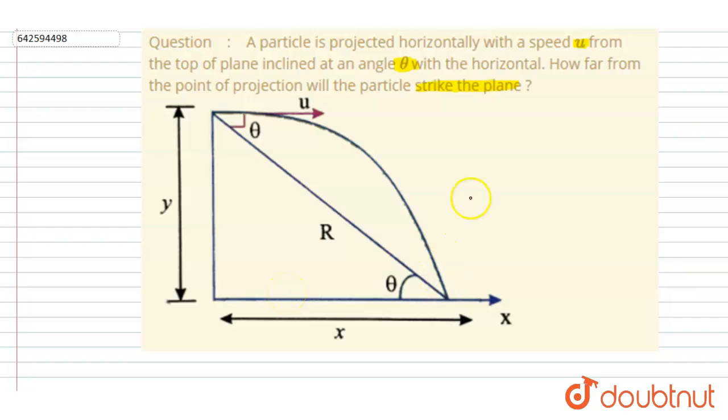Okay, so we know the formula for time of flight in case of inclined plane. You can see the perpendicular component of the velocity here, u_y is u sin theta.